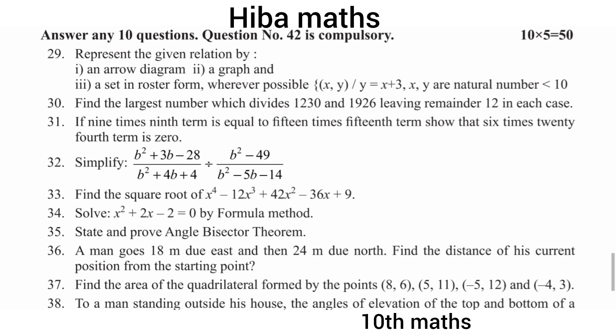Third question: if n times the nth term is equal to 15 times the 15th term, show that the 24th term is 0. This is an important question.